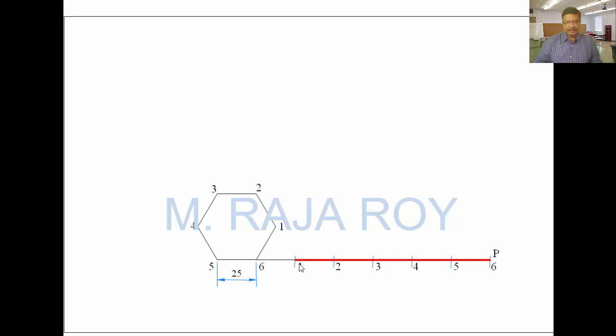Now, take P to 1 distance with compass. Mark this distance from this point 1 by extending this 6, 1 side. Extend this 6, 1 side like this and mark that distance here. This end point you call as P1. Now, take this point 6 as a center, this particular P to 6 as radius and draw a semicircle. Now, take P to 2 distance and after 2, you have to mark the P to 2 distance by extending this 1, 2 side like this. This point is P2.